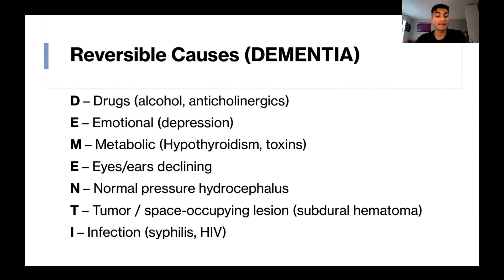I is for infection. Some specific pathogens to know about are syphilis and HIV. Here we can get inflammation in the brain causing symptoms.